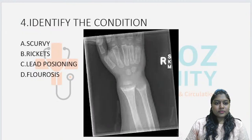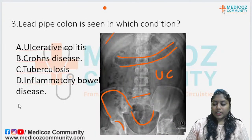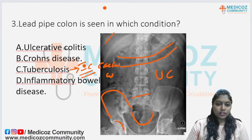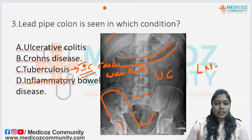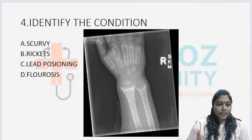Regarding the other options: tuberculosis definitely involves the ileocecal valve with cecal wall thickening and conglomerate necrotic matted lymph nodes. Irritable bowel disease presents with alternating constipation and diarrhea. So the other options are excluded, and ulcerative colitis remains the correct answer.